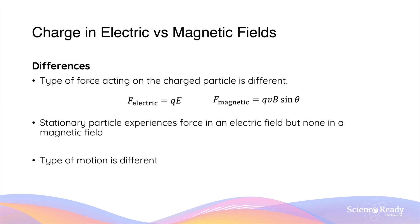Now, what about differences? Let's start with the type of force. The origin of the two forces comes from different types of fields. The electric force comes from the electric field, which is usually generated by a pair of parallel metal plates connected to a potential difference, and a magnetic force is produced by an external magnetic field acting on a moving charged particle.